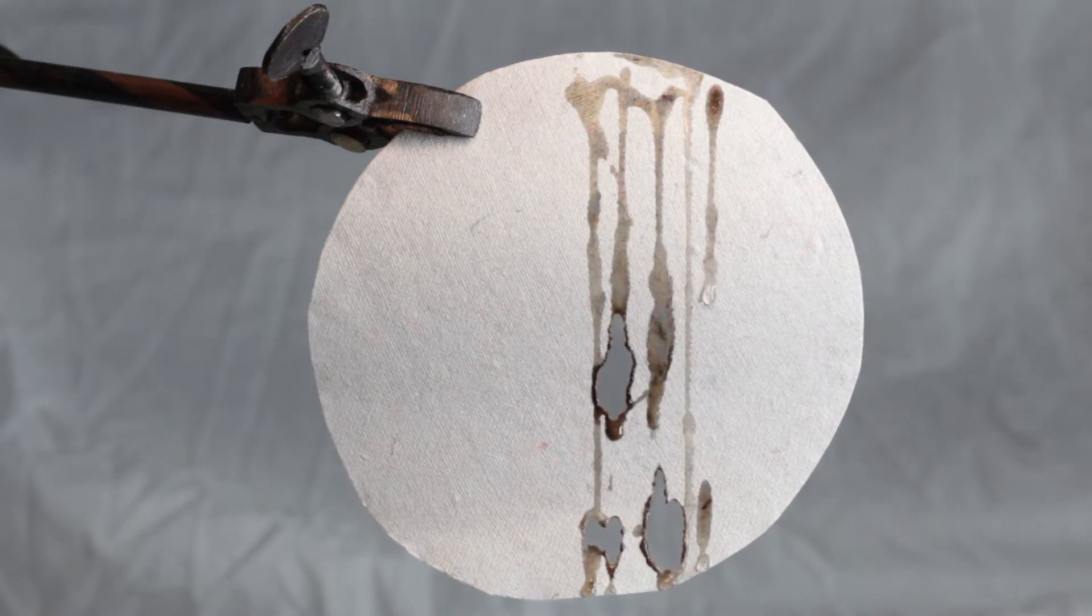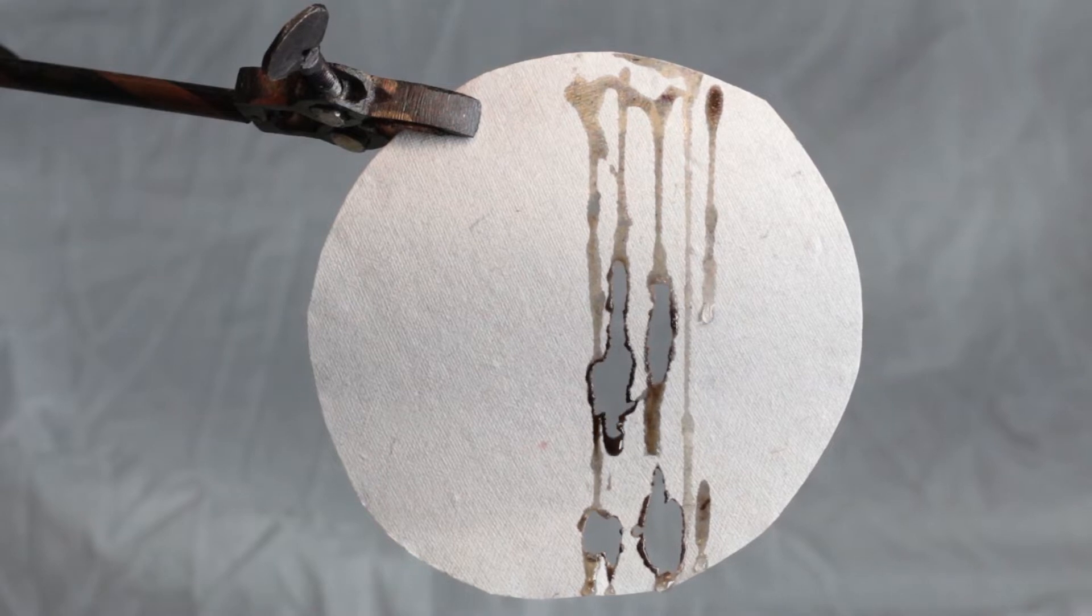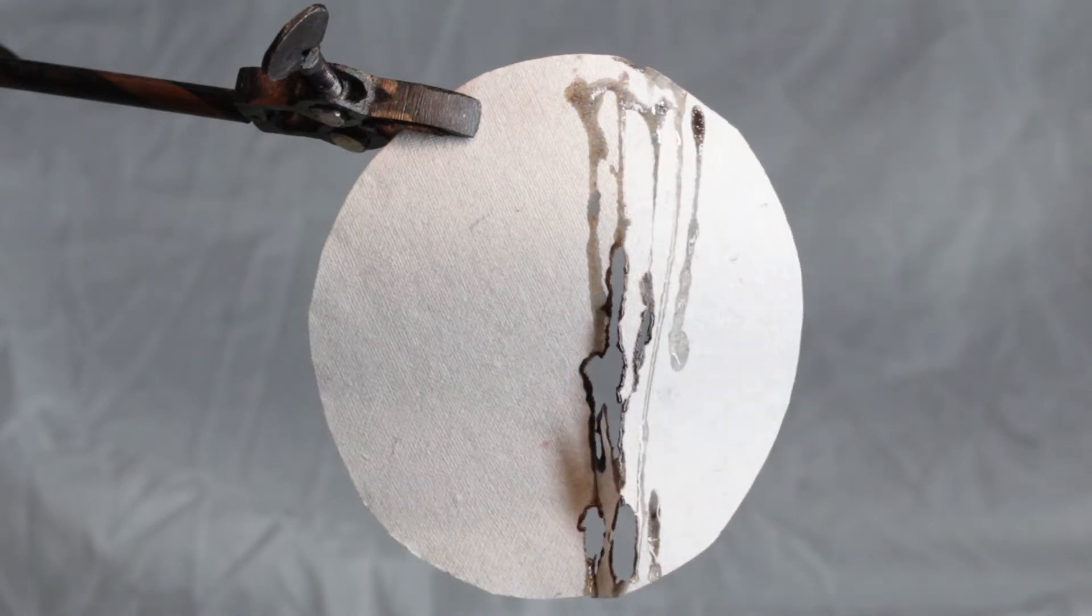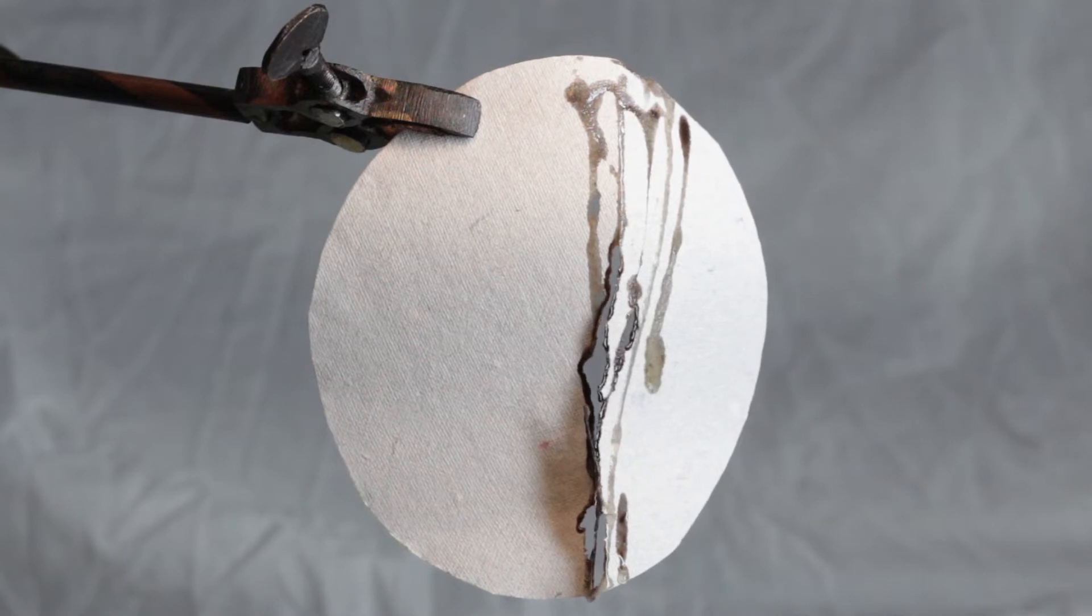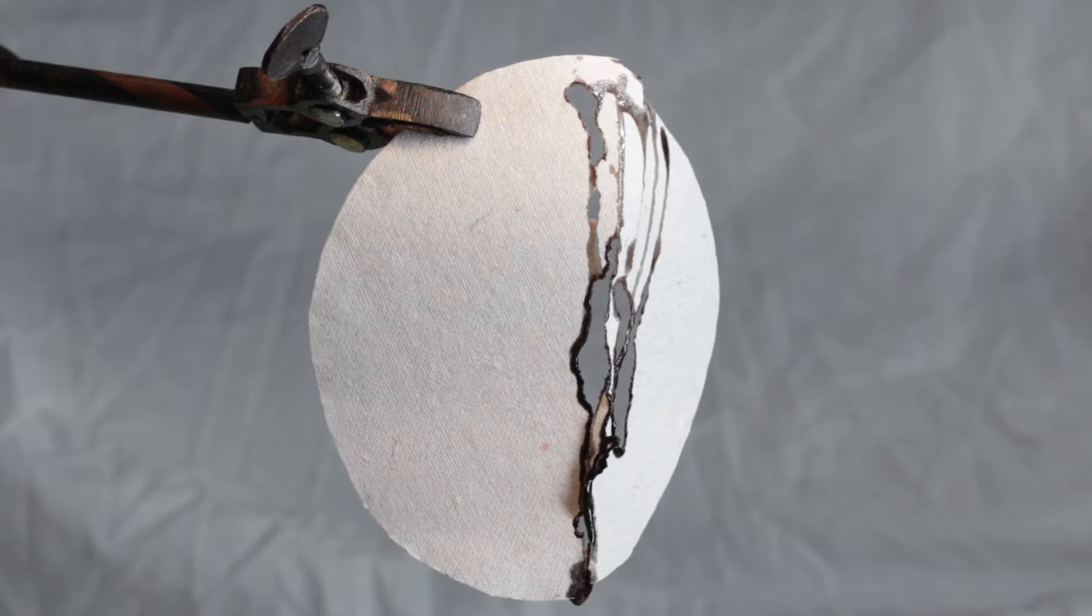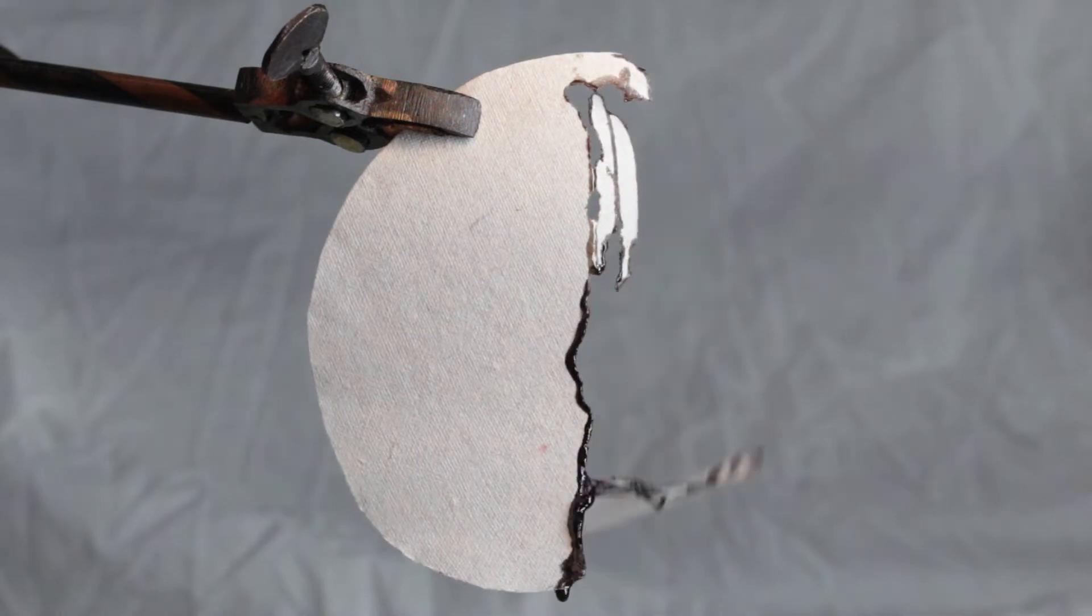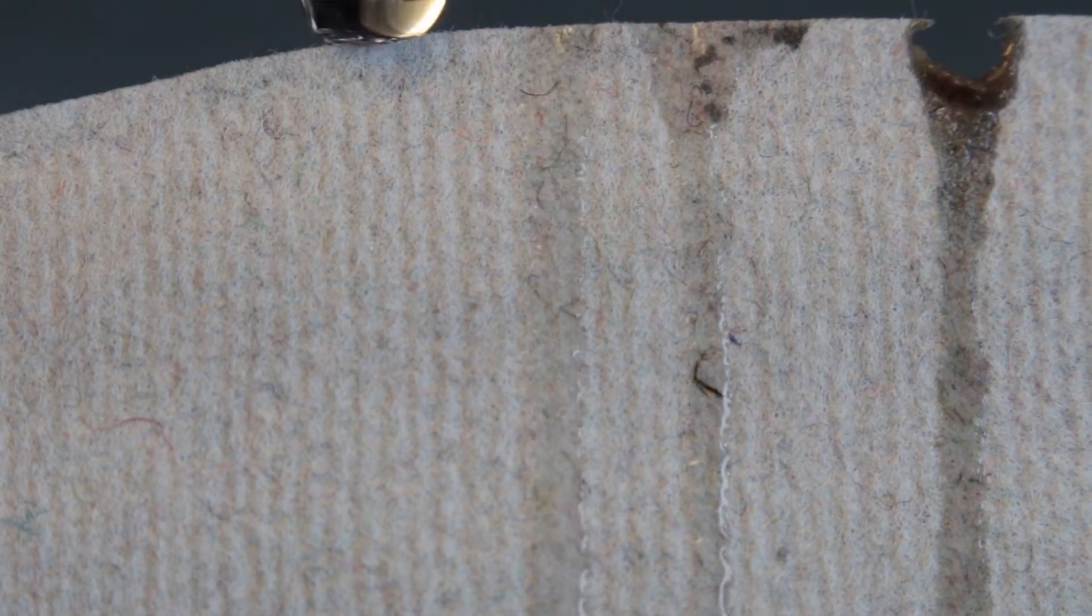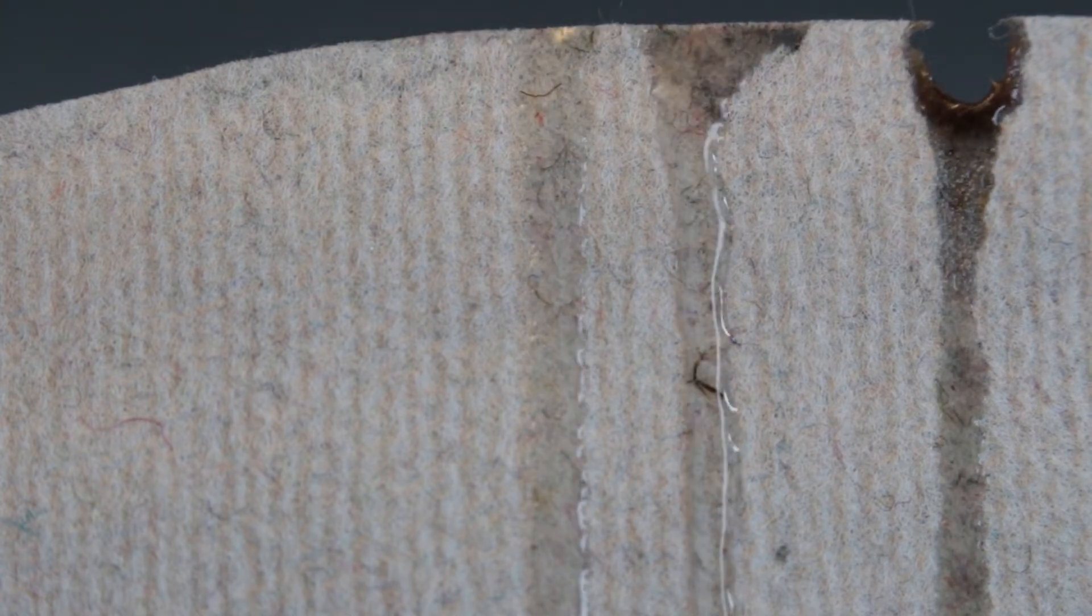You see what happens? Sulfuric acid has such an affinity for water that it can extract it from the carbon skeleton with H and OH groups attached to it as water molecules, leaving behind just charred leftover carbon skeleton.